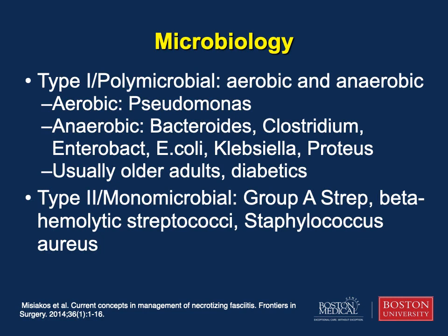Depending upon the etiology, there are two types of necrotizing infections. Type 1 is of polymicrobial origin, while type 2 is due to monomicrobial infection. In the majority of cases, aerobic and anaerobic bacteria are involved as a result of anorectal or urogenital trauma or infections such as Fournier's gangrene. The synergistic effect of the bacteria can result in fulminant gangrene, multi-system organ failure, and death. These infections are typically seen in older adults, typically male, and diabetics. Type 2 infections are monomicrobial in nature and often caused by streptococci or staphylococci. They are found usually in healthier patients with a history of some trauma, surgery, burn, laceration, or intravenous drug use.